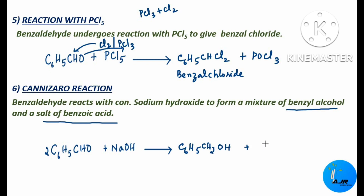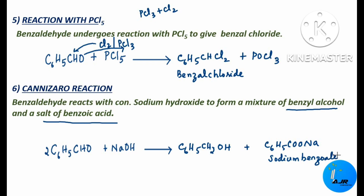Benzoic acid is C6H5COOH. Instead of one hydrogen, if you have sodium, it is called sodium salt of benzoic acid or sodium benzoate. This one is benzyl alcohol.